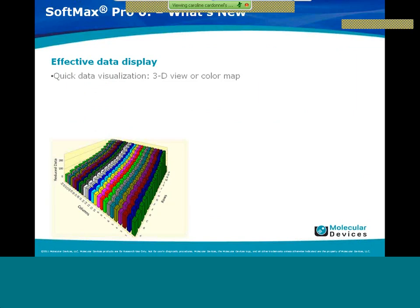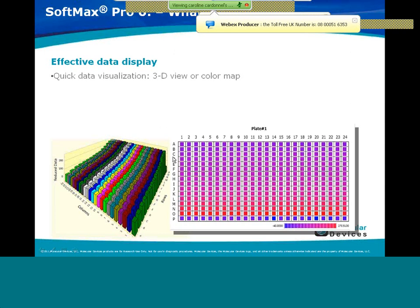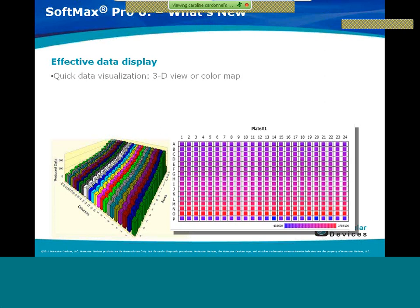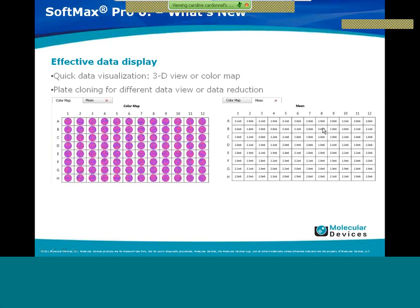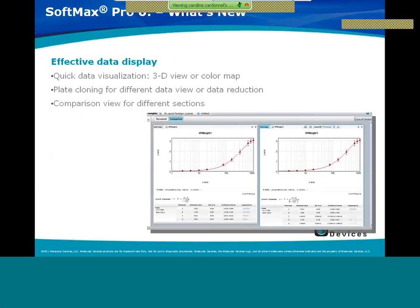SoftMax Pro 6 has a very effective data display with a new 3D view and color map that will allow you to easily identify certain samples such as positive controls and negative controls, desired dilutions within your plate, or samples that are not within range of your replicates. There is also plate cloning that allows you to view or analyze the data differently without reading the plate a second time. The comparison view allows you to see multiple sections of the protocol in a single window.